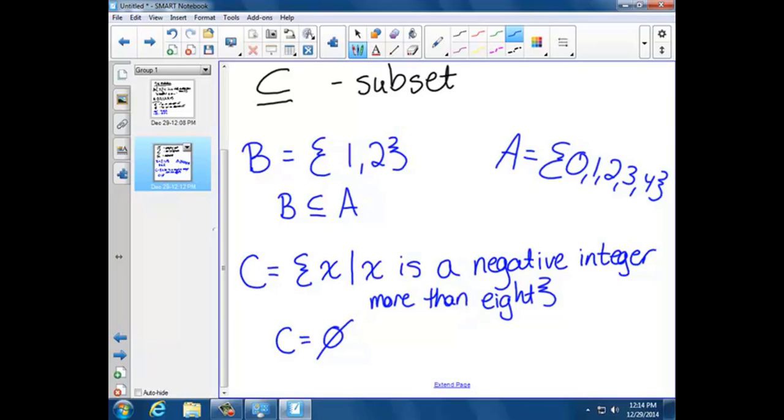So we would say that's an empty set. C is an empty set because there's no number more than 8 that is negative. And that is a few examples of different set notation and how we use it.